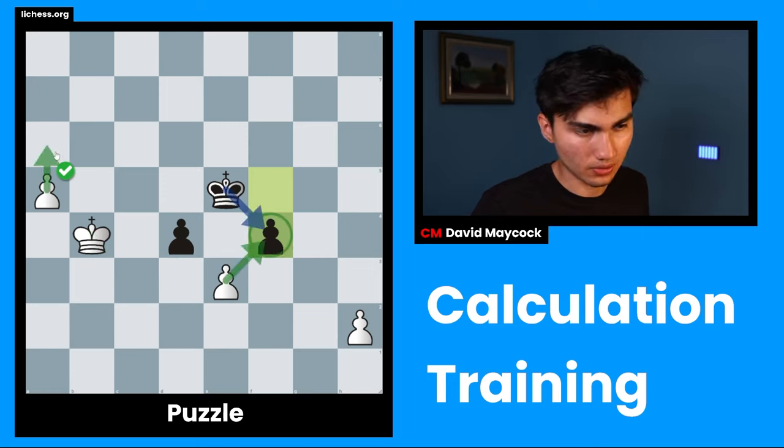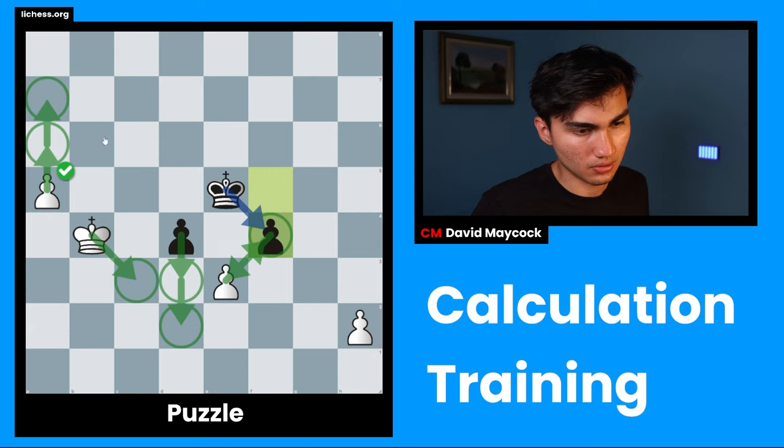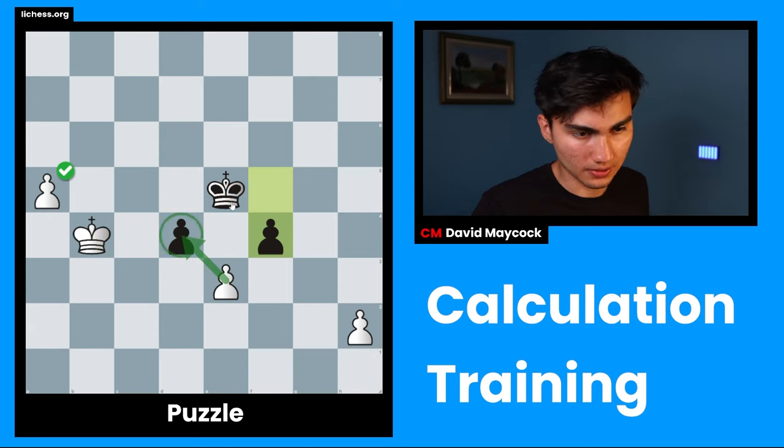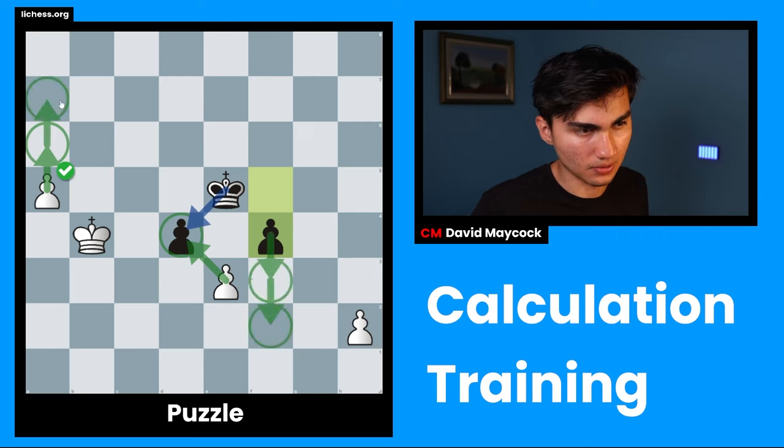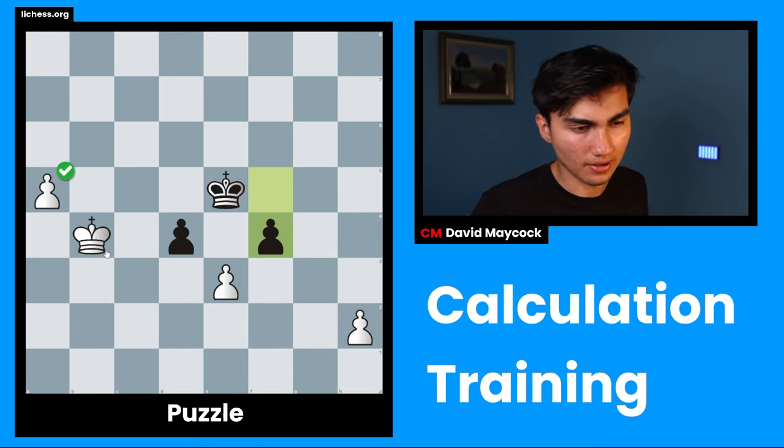So, e takes f4, king c4, a6, d3, king c3, king e3, a7, d2. And there's no way. Okay. And what about e takes d4, king takes d4, a6, f3, a7, f2, a8, f1. Once again, we get that endgame where it's not clear. Ah, but I have an idea. This is amazing. So, I can play. That's amazing, actually. Is this real? King c4, e takes f4. No, I'm crazy. King e3, king f4, a6, king f3, a7. No, it does work because I queen with check. That's amazing.